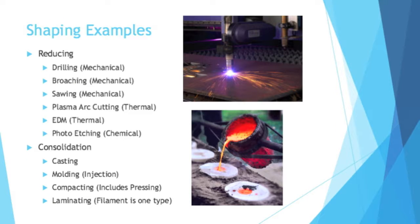Getting more specific with shaping examples: under reducing we have drilling, which is mechanical — most people are familiar with that. There's also broaching, also mechanical, which involves more complex shapes like keyholes. Then there's sawing, again mechanical — you've probably sawed in your life.